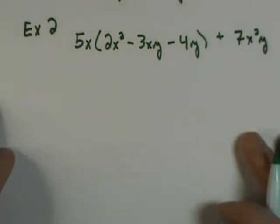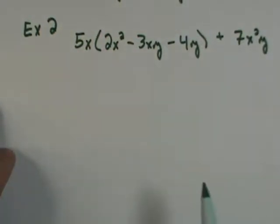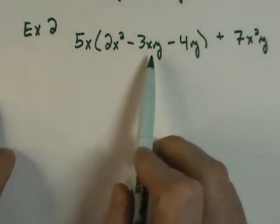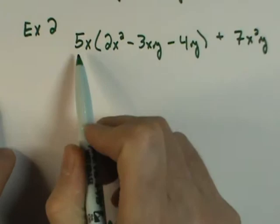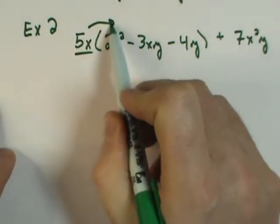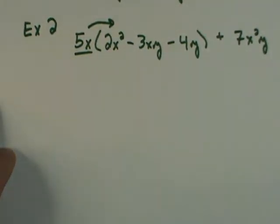Example 2 for multiplying monomials over polynomials. As we look at this first part of the problem, it indicates that we need to distribute the 5x across the set of parentheses.